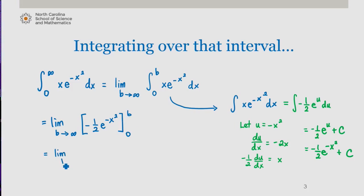And then, using the fundamental theorem of calculus, we evaluate the limit as b approaches infinity of -1/2 e^(-b²) + 1/2 e^0. Now, as b approaches infinity, this term right here goes to 0, and this ultimately equals 1/2. So since this limit exists, this integral converges, and in fact it converges to 1/2.